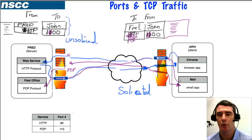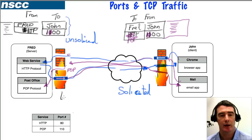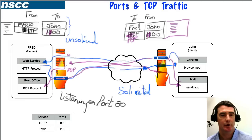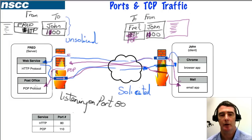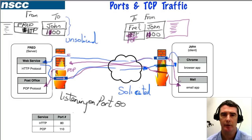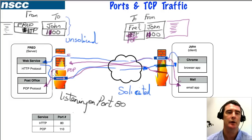Because these two ports are open on Fred's firewall, we say the web service is listening on port 80 and the post office is listening on port 110, the POP port. So that's how ports and TCP addresses are used together to send information from applications through the internet to another computer's service and back again.